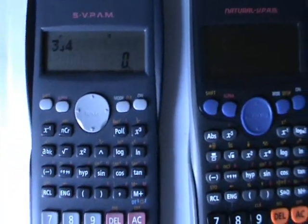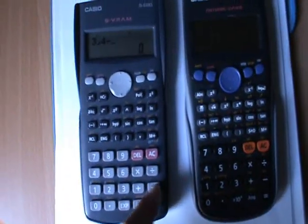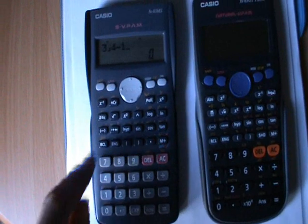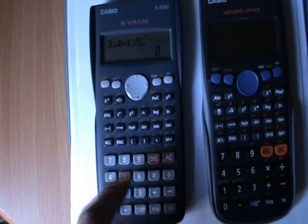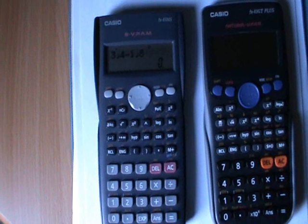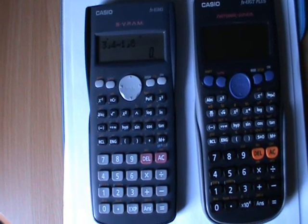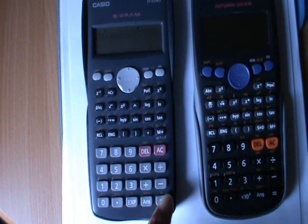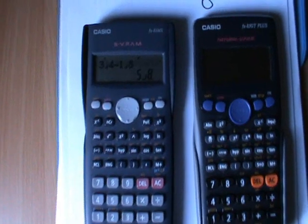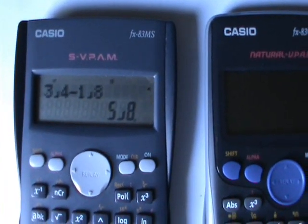So now I can carry on with the sum. I can press take away 1, ABC, 8. So I've now got 3 quarters take away 1 eighth. If I press equals, it tells me the answer 5 eighths.